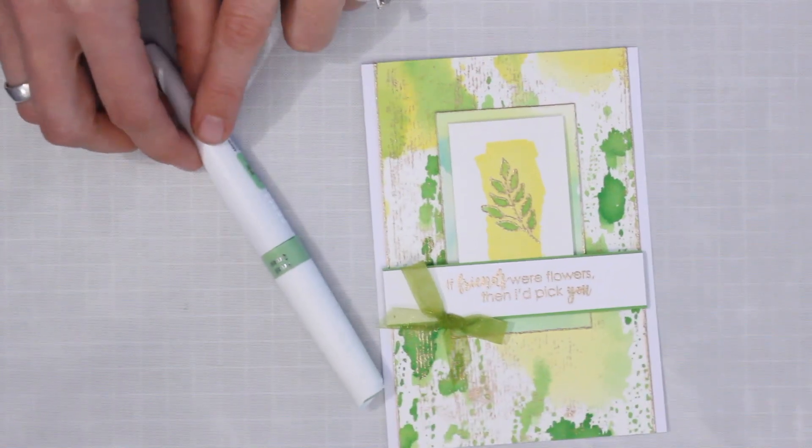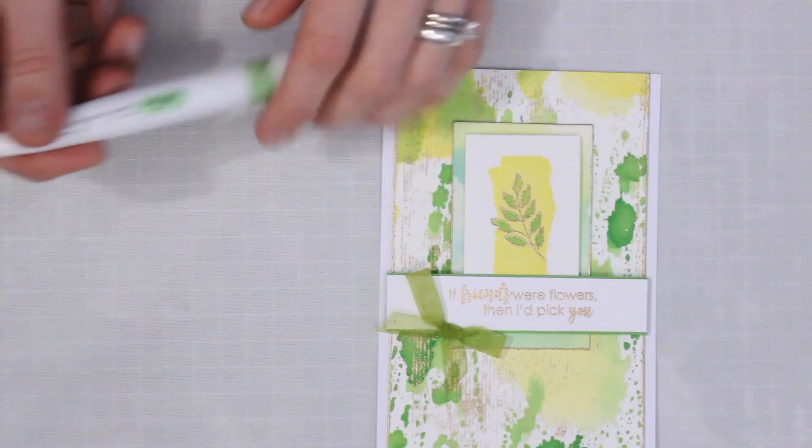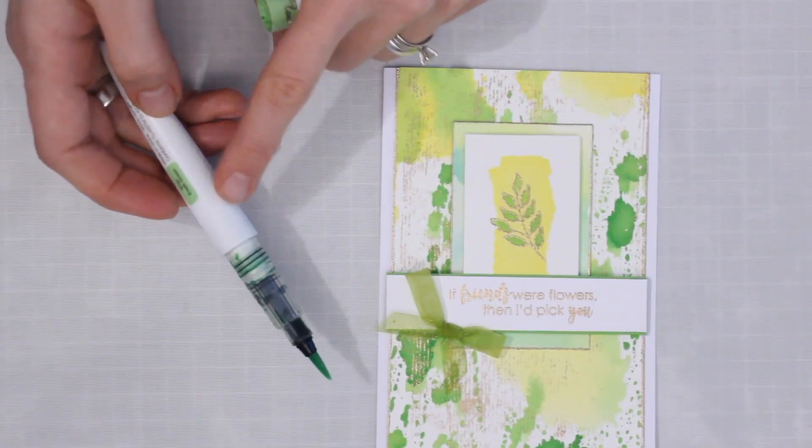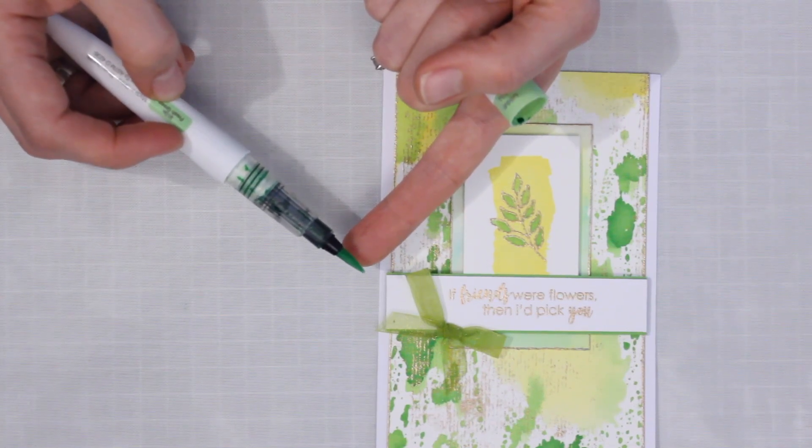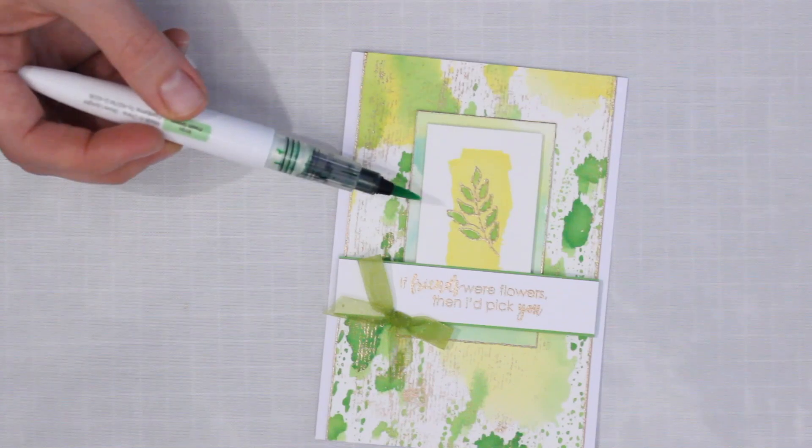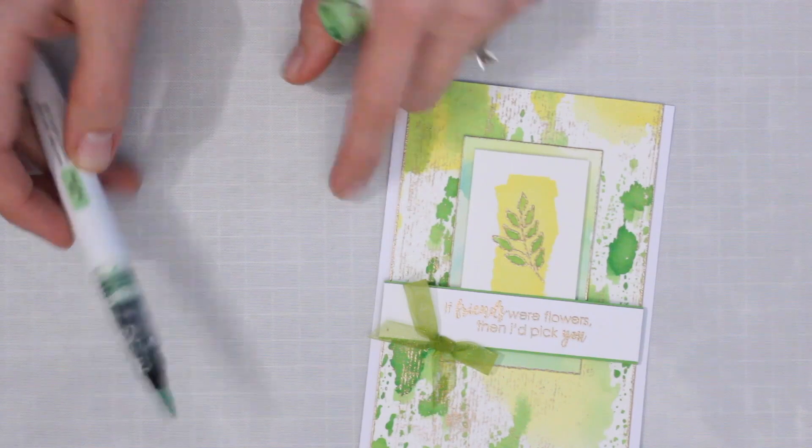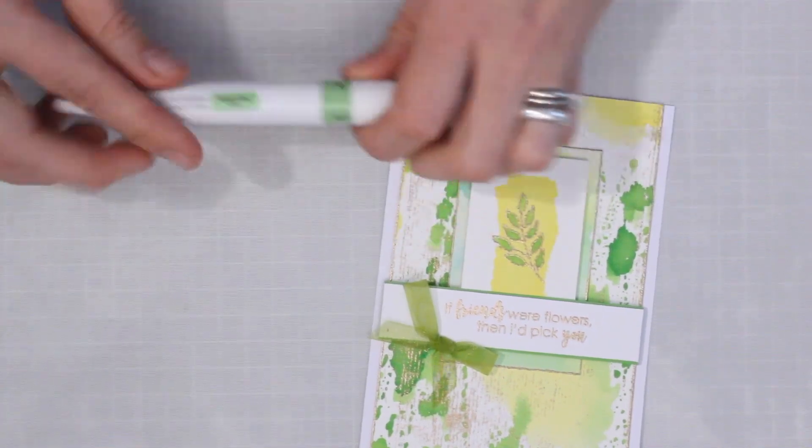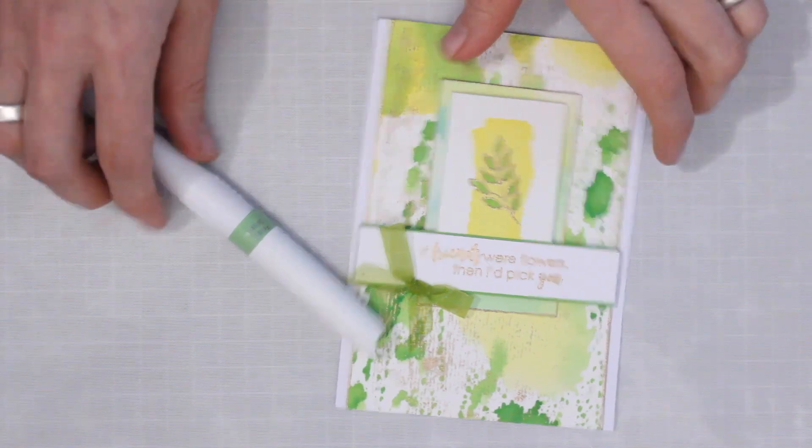Now the watercolors that I'm working with are in a pen format and these are from Tonic. These are the Nuvo aquaflow and what you've got is a liquid watercolor in the barrel of the pen and then you've also got a really nice tip on here which means that you can get some detail coloring, but you can also get some nice wash effects and you can also use your craft sheet as your palette to do some fun background techniques, which is what we're going to do.